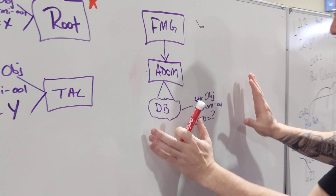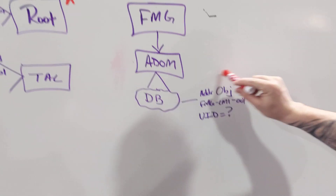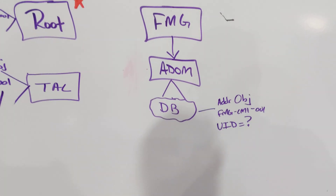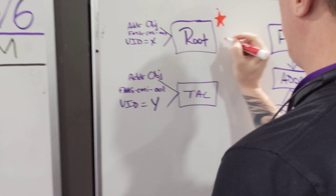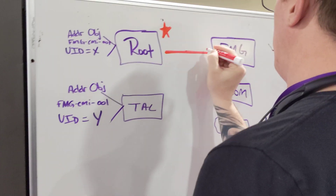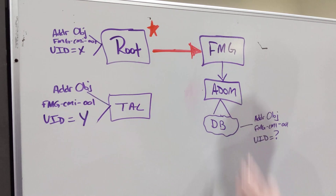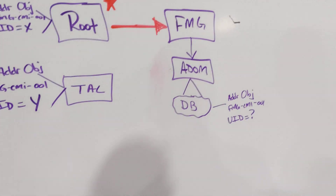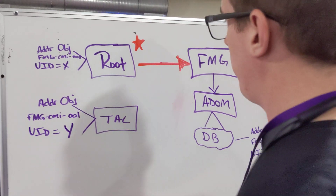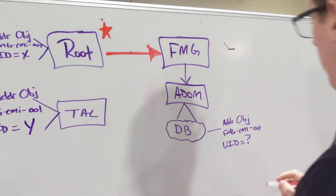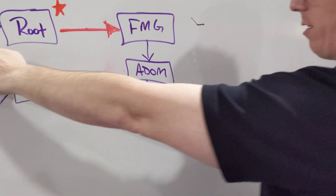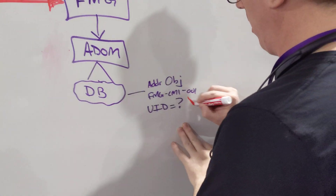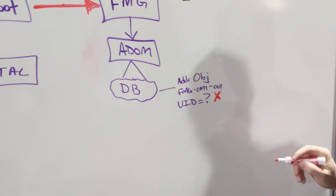We just created an ADOM that is completely blank — there's no address object in this database with a UID. The first thing we're going to do is import our primary, because it has like 90% of the address objects that we want to use. We're going to say this is authoritative and copy this entire database over, so the address object for FMG is going to be X — the authoritative value for the FMG is now X.